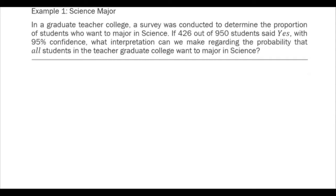Example 1: Science Major. In a graduate teacher college, a survey was conducted to determine the proportion of students who want to major in science. If 426 out of 950 students said yes with 95% confidence, what interpretation can we make regarding the probability that all students in the teacher-graduate college want to major in science?